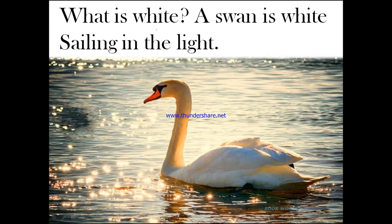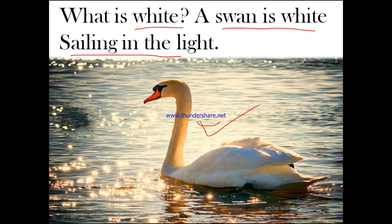What is white? A swan is white sailing in the light. See this picture. A swan is kind of a duck — it is very big, very beautiful, and very white in color. And what is the swan doing? The swan is sailing in the light — it is in a river or a pond, and with the sun shining there is so much light all around the swan that it looks as if the swan is sailing in the morning light.